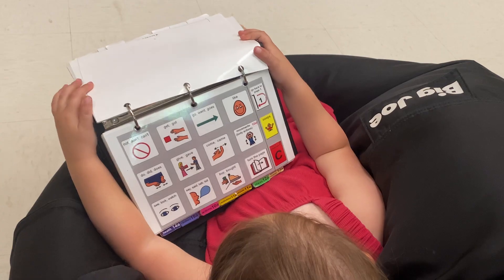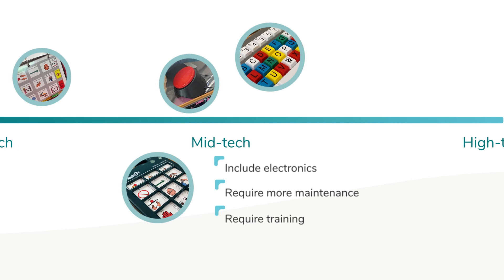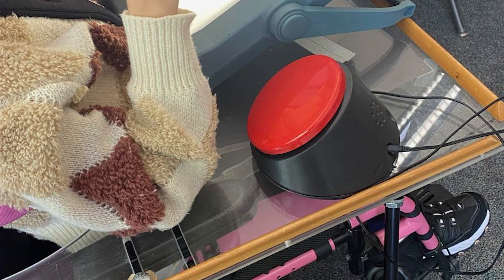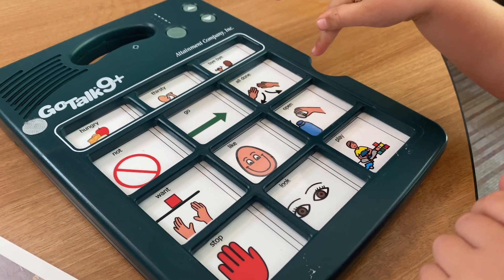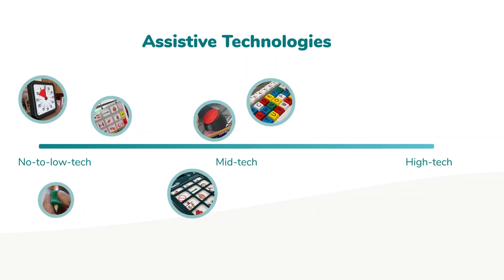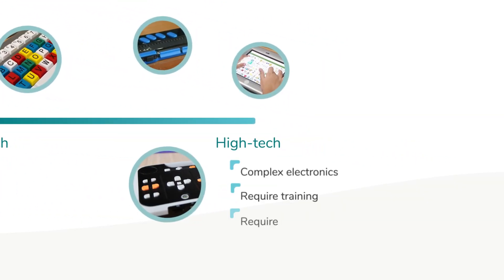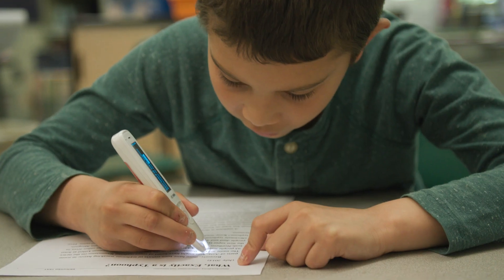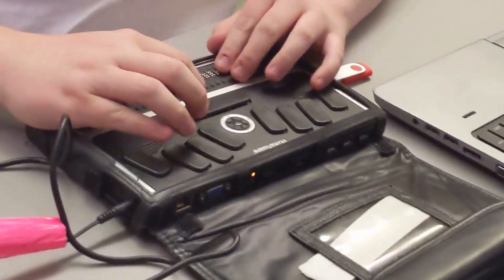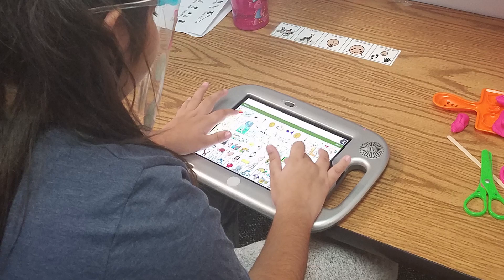Mid-tech devices include electronics and therefore require more maintenance. They also require training for staff to use them. These can be single message switches and communication overlays for speech generating devices or alternative keyboard options. High-tech options are those items that are complex electronics and require training and maintenance. These might be text-to-speech or screen reading software on a laptop, refreshable braille displays and keyboards, and even dedicated speech generating devices.